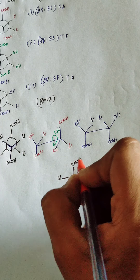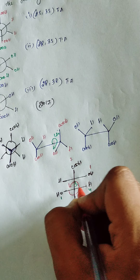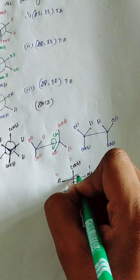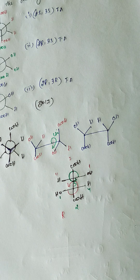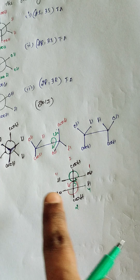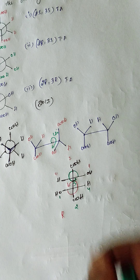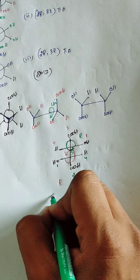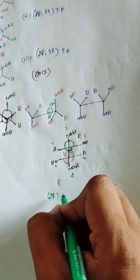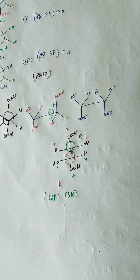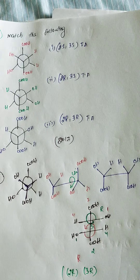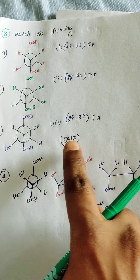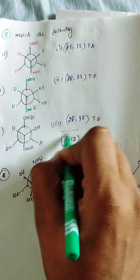For the back carbon: priority order 1, 2, down 3, and 4. Rotating 1→2→3 is also anti-clockwise, with least priority in the horizontal, so this carbon is also R configuration. Therefore it is 2R, 3R — which is the R,R-tartaric acid. The correct match is the third option.